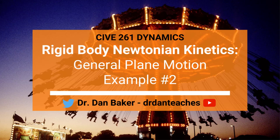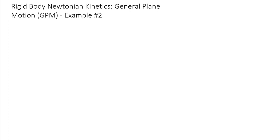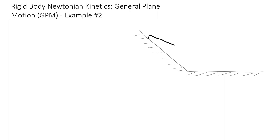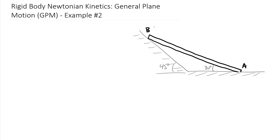Hello students of Dynamics, this is Dr. Dan Baker with another video talking about rigid body Newtonian kinetics for bodies in general plane motion. This is a second example where we have a slender rod confined by a surface which changes angle. The slender rod sits down to the horizontal portion of the surface, which has an angle of 45 degrees from horizontal, and the rod itself has an angle of 30 degrees from horizontal. We have point B and point A, and this overall rod is four feet long.